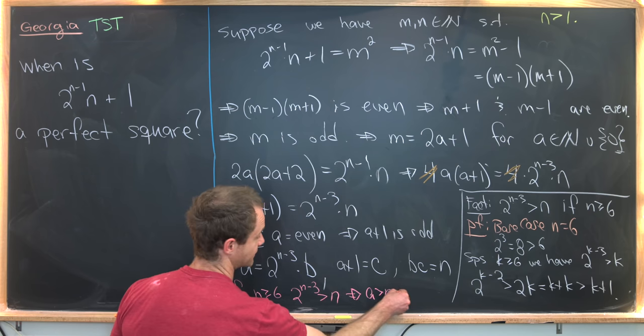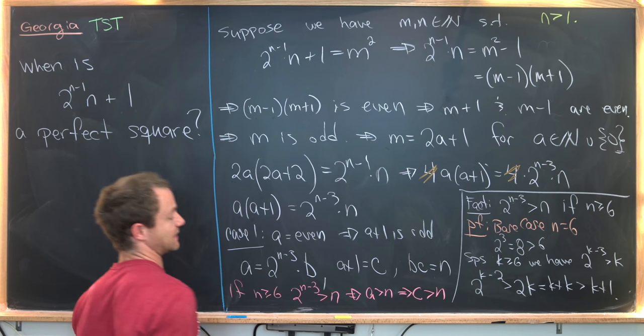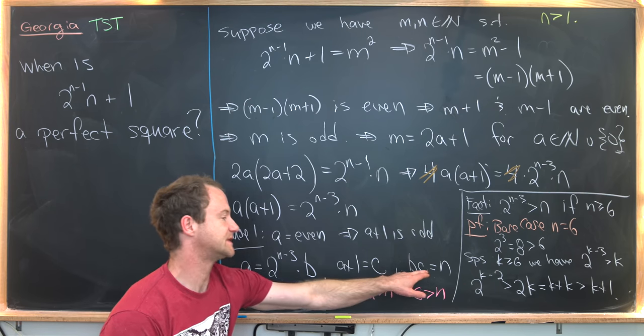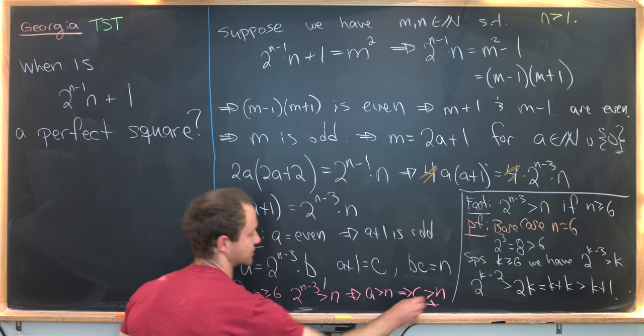But if a is bigger than n, then a+1 is also bigger than n, but that's equal to c. So c is bigger than n. But putting this all together, we see that b × c is bigger than n, but that means that n is bigger than n, which is a contradiction.